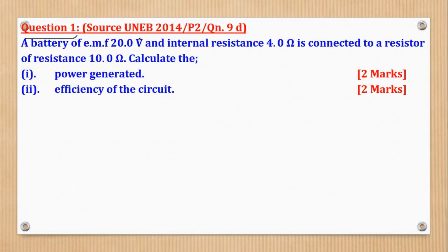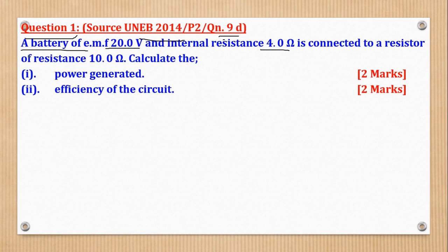Question 1 came from UNEB 2014, paper 2, question 9D. It says: a battery of EMF 20V and internal resistance 4 ohms is connected to a resistor of resistance 10 ohms. Calculate: (i) power generated, and (ii) efficiency of the circuit.